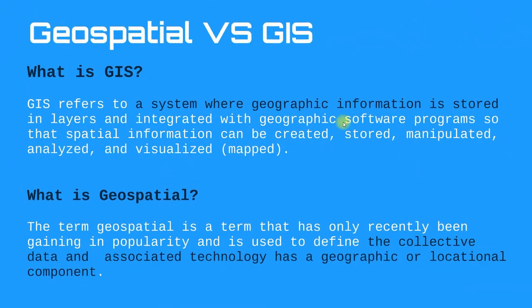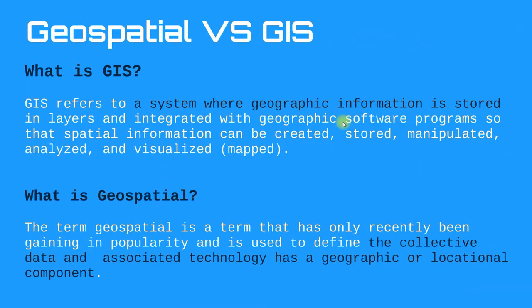First of all, what is spatial versus GIS? GIS refers to a system where geographic information is stored in layers and integrated with geographic software programs so that spatial information can be created, stored, manipulated, analyzed, and visualized.